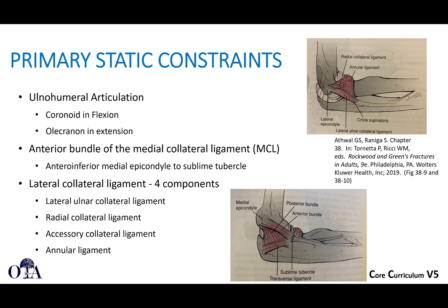The primary constraints are: first, the ulnar humeral articulation — the coronoid in flexion and the olecranon in extension. Second, the anterior bundle of the medial collateral ligament. Third, the lateral collateral ligament complex, which has four components: lateral ulnar collateral ligament, radial collateral ligament, accessory collateral ligament, and annular ligament.